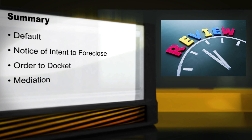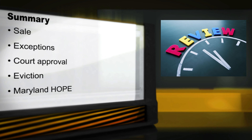Let's summarize what you have heard in this video. Remember, foreclosure begins with a default. If you default, the lender will send you a notice of intent to foreclose, followed by an order to docket. You are entitled to mediation if you request it in a timely manner. If you don't reach an agreement in mediation, the lender can sell your home. After the sale, the lender must file a report. You have 30 days after that report is filed to file exceptions to the sale. If the court approves the sale, the person who buys the house at the foreclosure sale may ask the court to award him or her possession of the home.